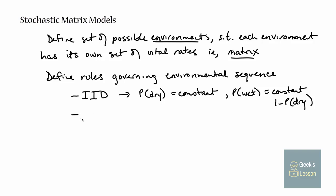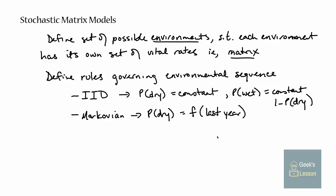The other common way is to have Markovian environments. This seems a bit more realistic because it means the probability of a dry year is some function of last year's environment. So maybe if last year was a dry year, the probability of having a dry year again this year is higher than it would be if last year was a wet year. We have a whole section about Markov models and Markov chains elsewhere.